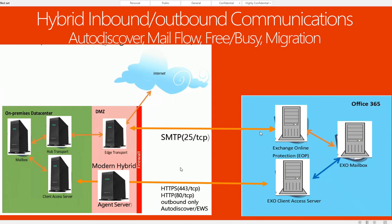There's a new hybrid method called modern hybrid. The previous screen showed the classic hybrid. The modern hybrid uses an agent. An agent is installed on a server — it can be installed on a client access server if you have a powerful one, or it can be installed on a separate server. The agent is inbound-only communications. This server is used for HTTPS communications, autodiscover, free/busy features, and also migration.